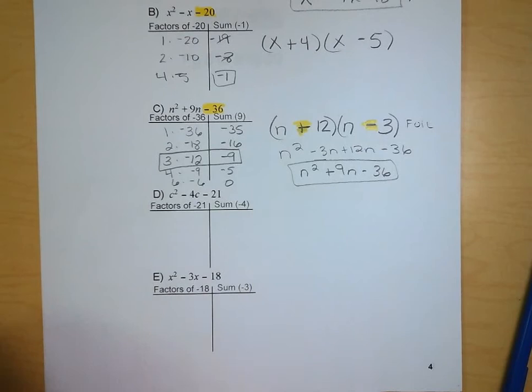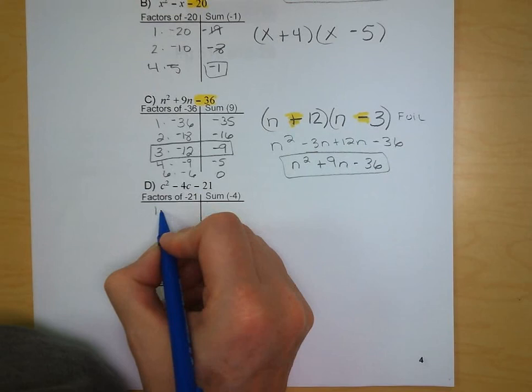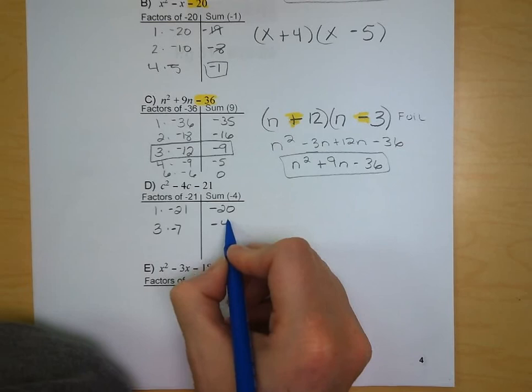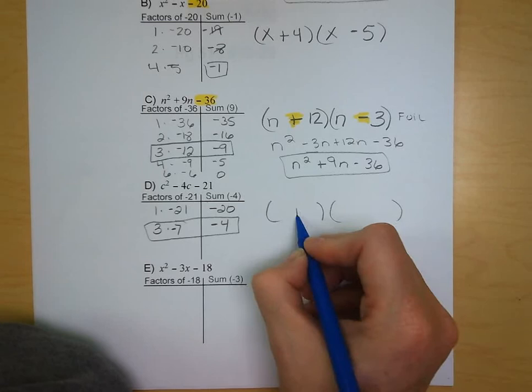Letter D: c squared minus 4c minus 21. Our factors: 1 and negative 21, and 3 and negative 7. Adding those up we get negative 20 and negative 4. The second set of factors is our goal, giving us c plus 3 and c minus 7.